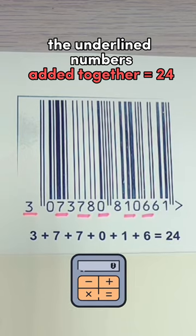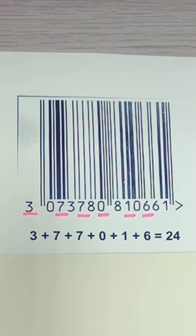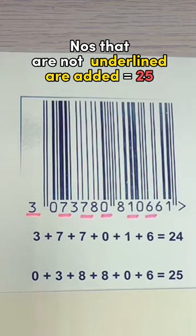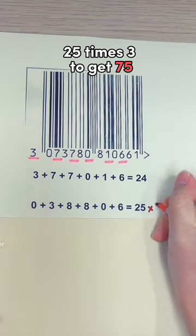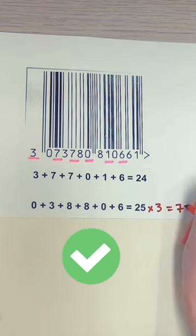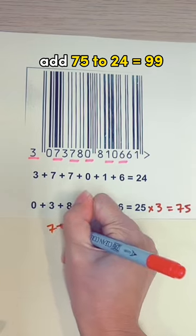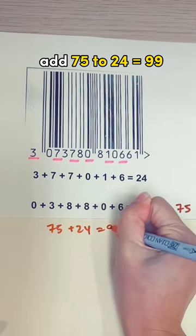The underlined numbers are added together to get 24. Then, the numbers that are not underlined are added together to get 25. We take 25 times 3 to get 75, and we add 75 to 24 to obtain 99.